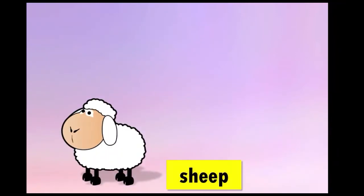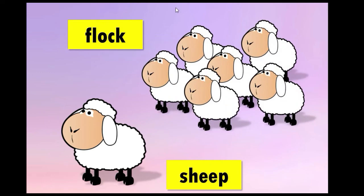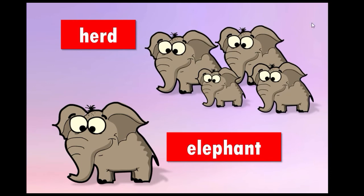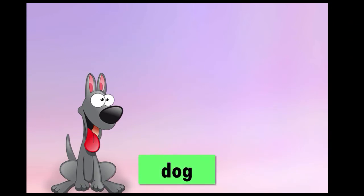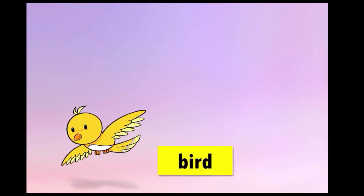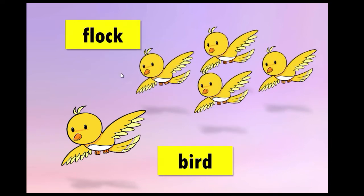In the next picture, we have a sheep. When we talk about a group of animals, we say a flock of sheep. When it is singular, just one, it is a sheep. When there are a lot of sheep, we say a flock of sheep. Next one — we have an elephant, just one. But when we talk about a group of elephants, we talk about a herd of elephants. Look at the next one — here we have a dog, individual, but we can have a pack of dogs, and also a pack of wolves.